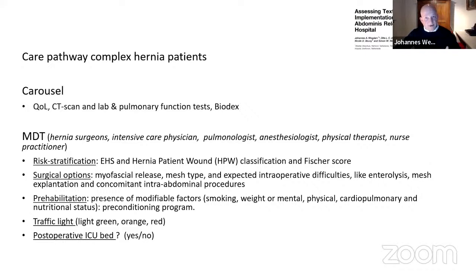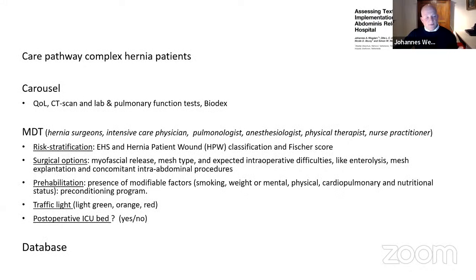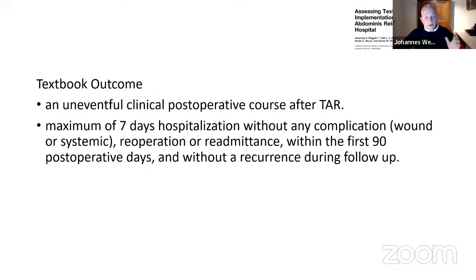We discuss surgical options and expected difficulties, then discuss modifiable factors, and on that basis assign the traffic light system — green, orange, or red. Green means nothing is necessary before operating. Red means no modifiable factors and no option — we will never operate them, even in an acute situation. Orange, the largest group, means prehabilitation is needed. If the patient meets their prehabilitation goals within half a year, they become green. If not, they stay orange or become red and go off the waiting list.